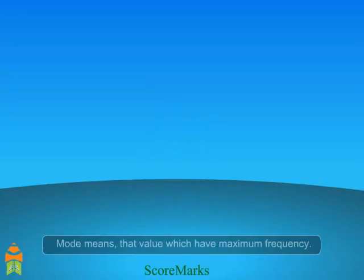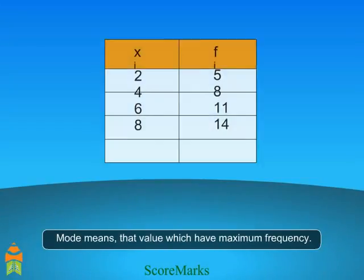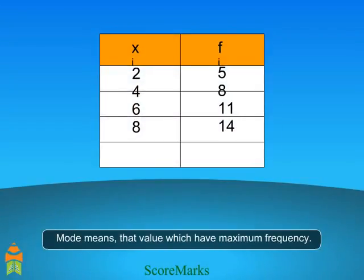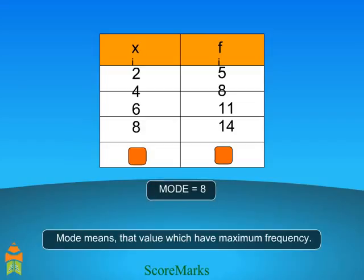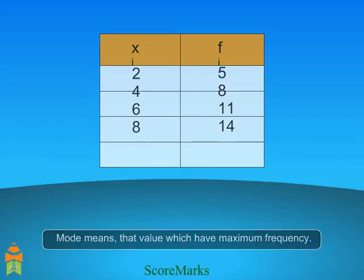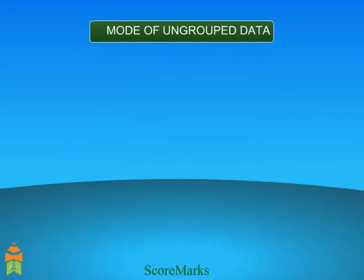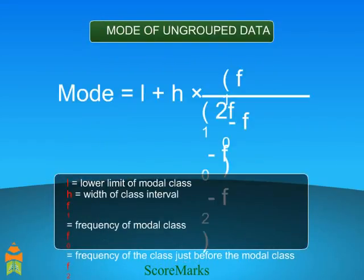Mode means that value which has the maximum frequency. For example, in this set of data, 8 has maximum frequency, that is 14. Therefore, mode is 8. Mode of ungrouped data can be obtained by this formula.